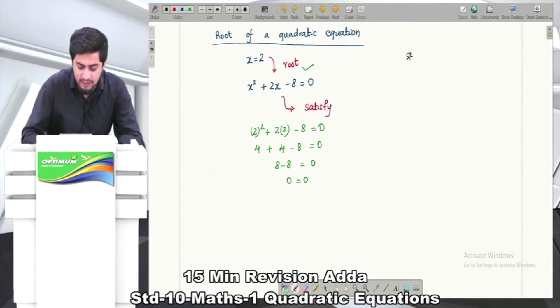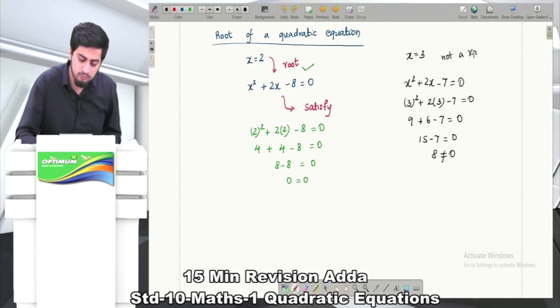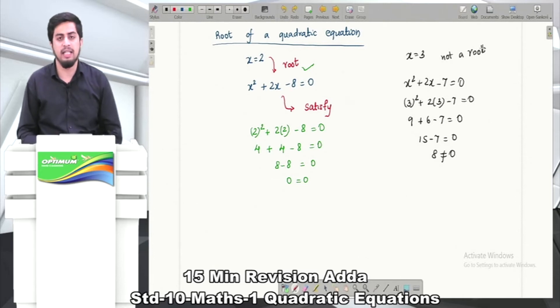Let's quickly take one more example. If I say x = 3, is it a root of this equation x² + 2x - 7 = 0? Let's check. Putting x = 3: 3² + 2(3) - 7 = 0. That's 9 + 6 - 7 = 0, which gives 8 = 0. Is this true? The answer is no, 8 is not equal to 0. Hence this is not a root.